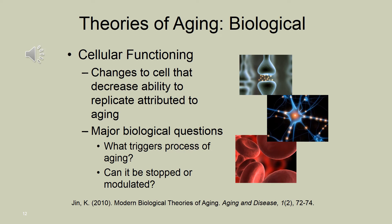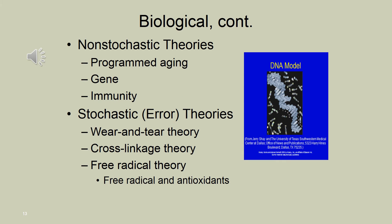We also have other types of theories, such as theories of aging, which fall under a few different categories. Biological theories of aging deal with cellular functioning and changes to the cell's ability to replicate as part of the aging process, with major questions such as what triggers aging and whether it can be stopped or modulated. Under biological theories are the non-stochastic theories, including programmed aging, genes, and immunity, as well as error-related theories covering wear and tear, cross-linkage, and free radicals — relating to the wearing out and errors that may occur in our biological processes.